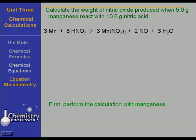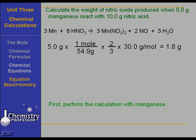So let's perform the calculation with manganese first. It doesn't matter. Could have performed it with either one. 5 grams times 1 mole of manganese over 54.9 grams per mole times 2 to 3 mole ratio. That's 2 in front of the NO over 3 in front of the MN. Remember, it's what you're looking for over what you've got. If you don't know that, go back and look at a unit on mole to mole ratios times 30 grams per mole. That is the molecular weight of nitric oxide. And that would give us 1.8 grams of nitric oxide produced if and only if manganese is the limiting reagent.